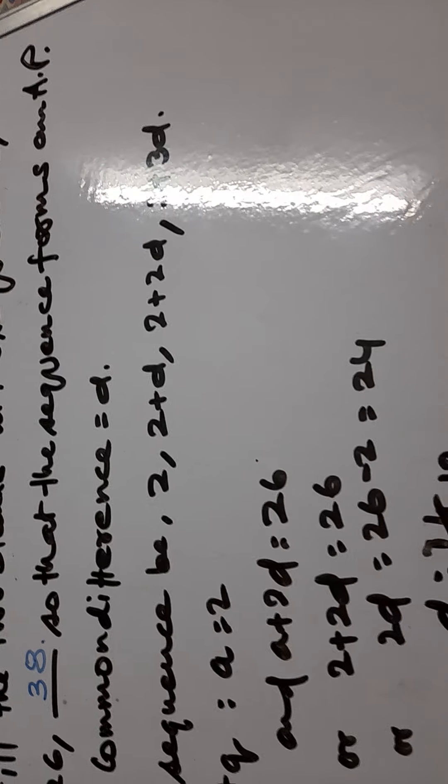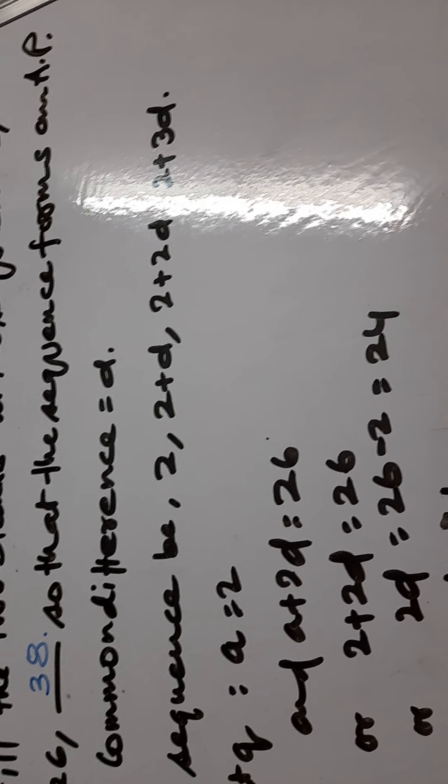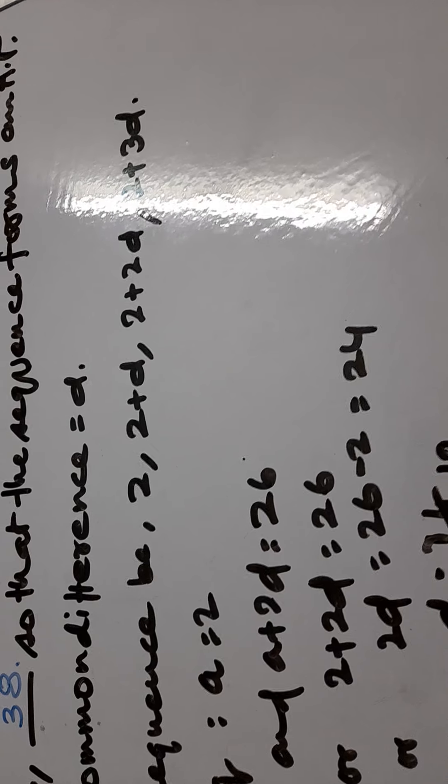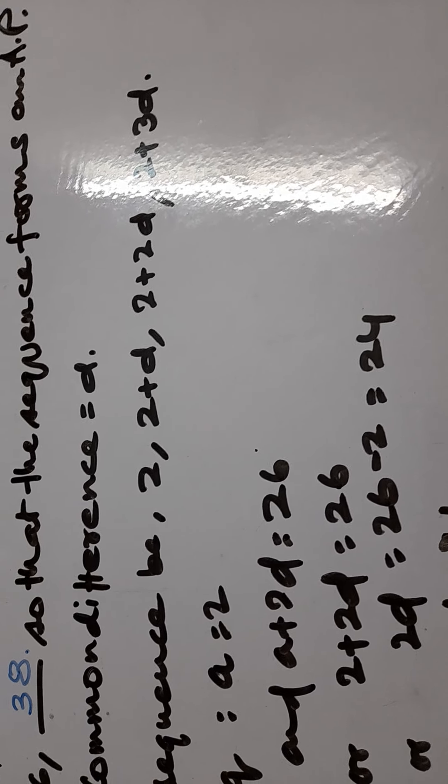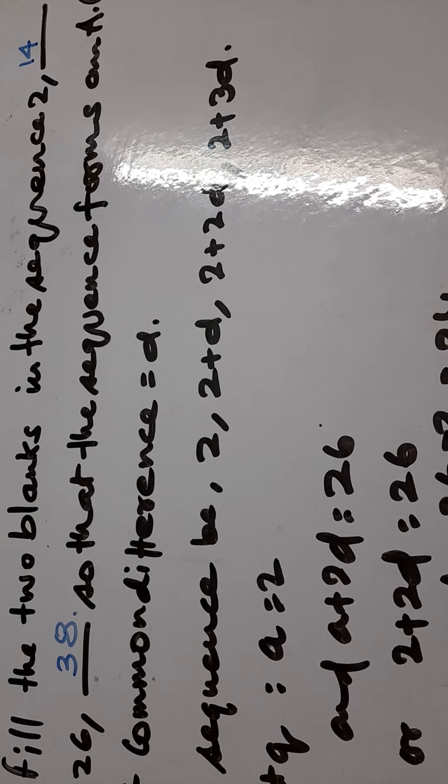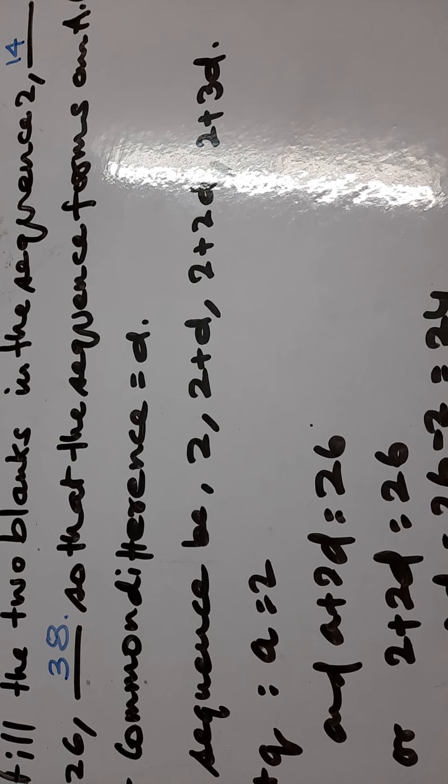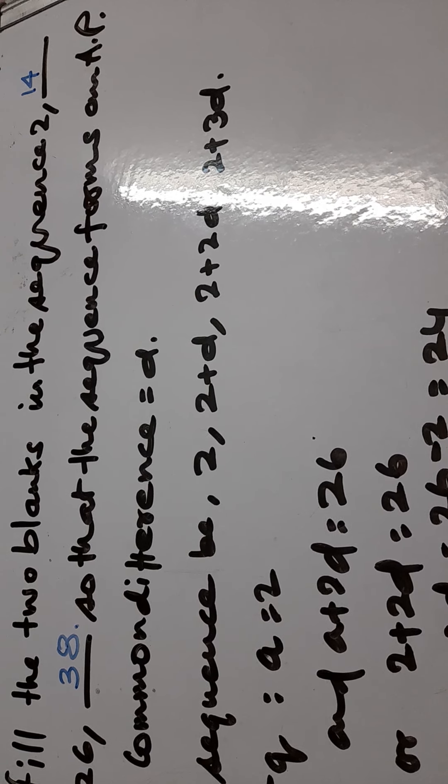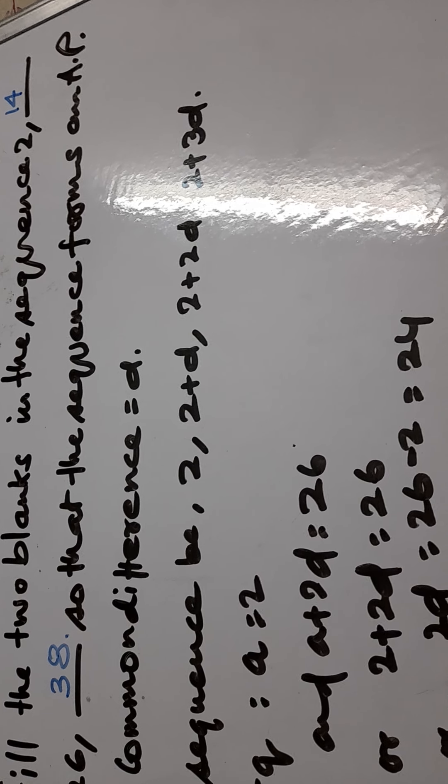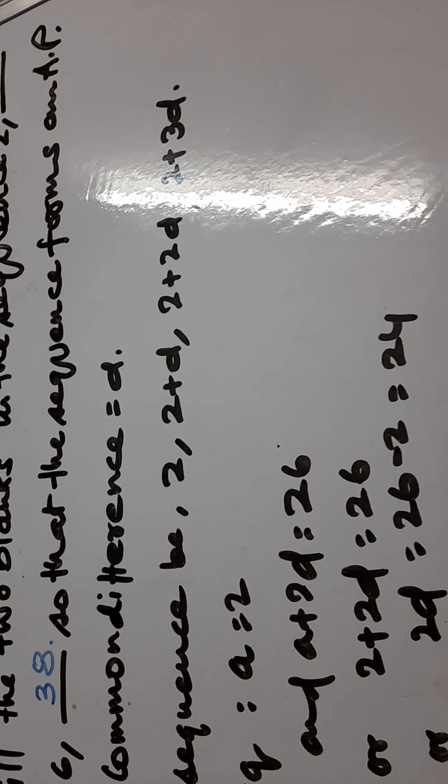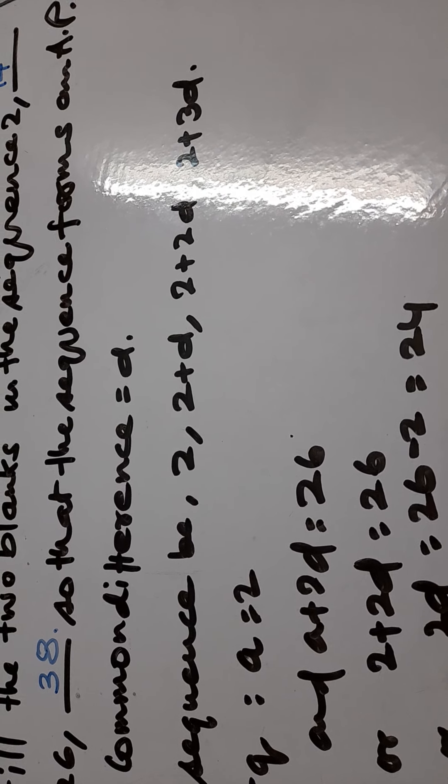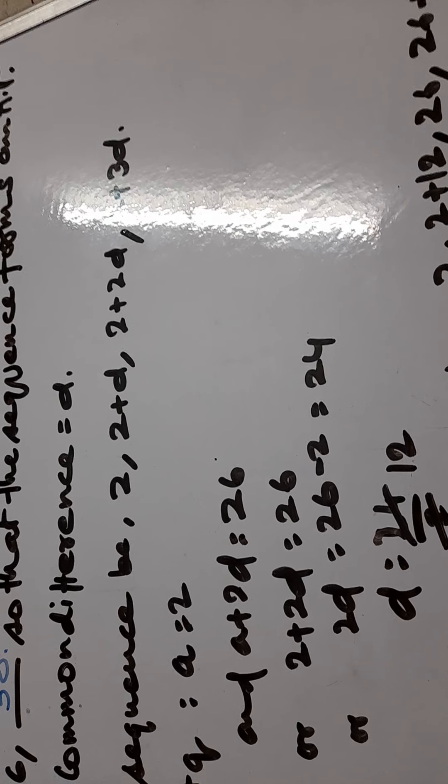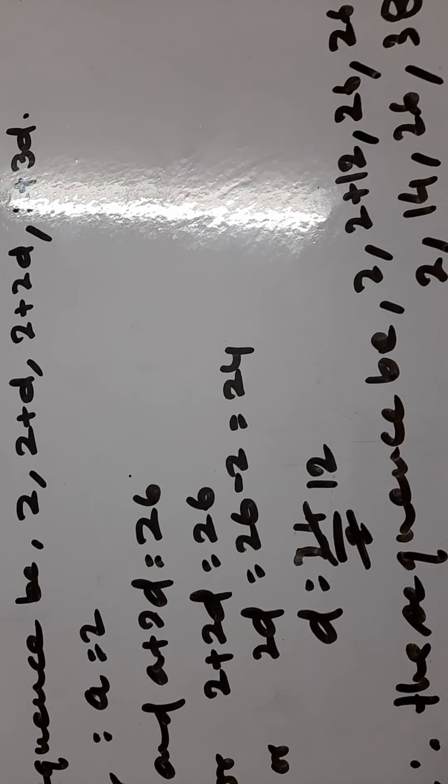The first term is A and it is given 2. Second term is A plus D which is not given, to fill. And A plus 2D is given and it is 26. So if you solve 2 plus 2D equals 26, 2D equals 26 minus 2 that is 24. So D equals 24 by 2 and that is 12.